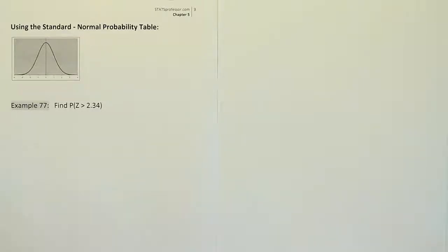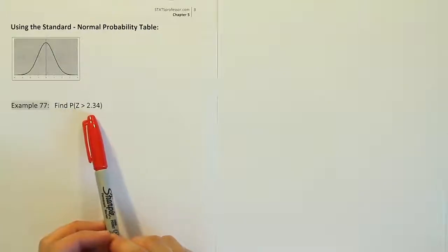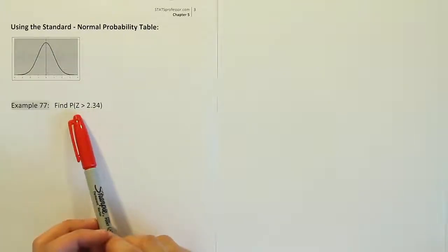Example 77. In this problem we're finding the probability that a z-score value is greater than 2.34 on the standard normal curve.